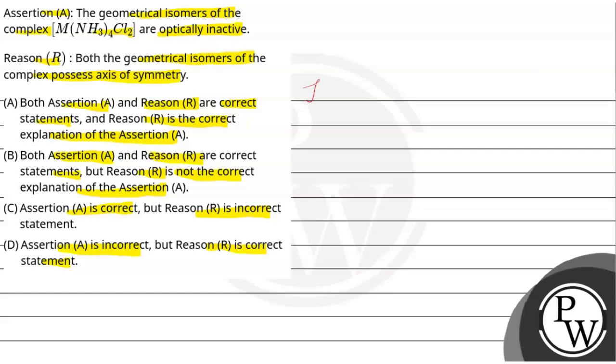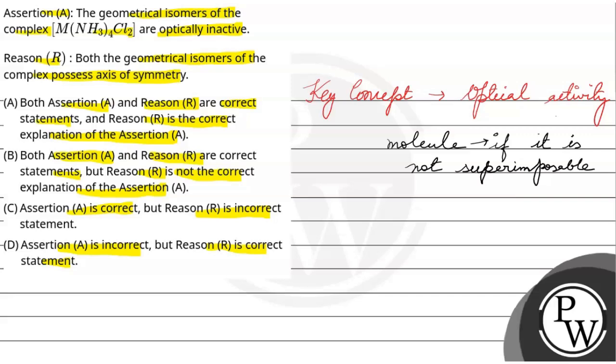So, let's answer this question. Let's see the key concept which is optical activity. What is optical activity? It is the property of a molecule where the molecule is optically active if it is not superimposable on its mirror image.